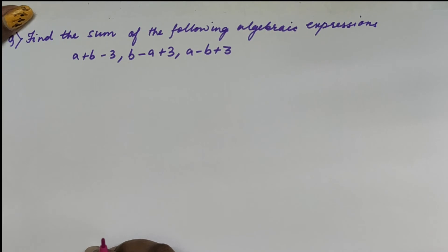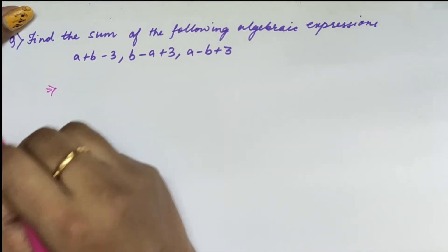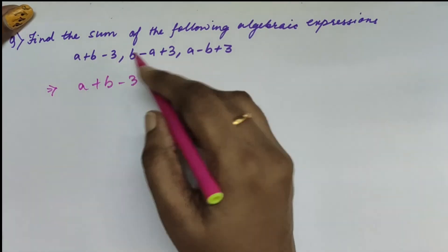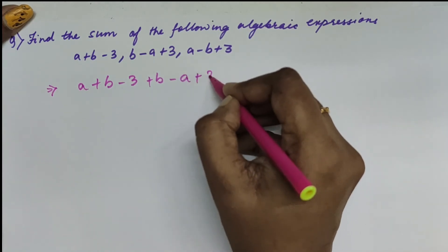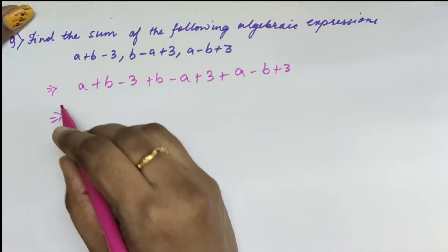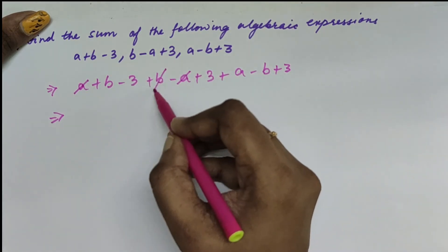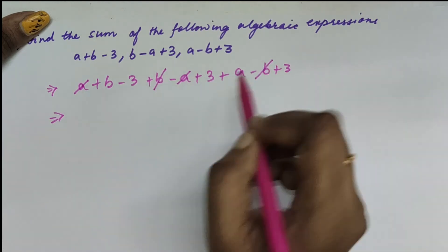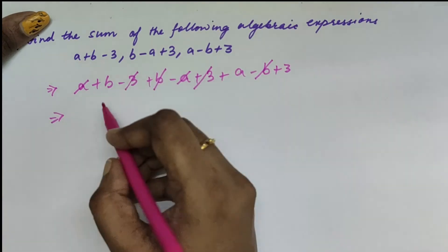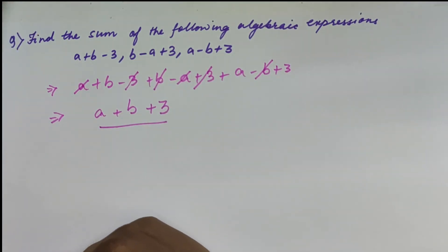The next question asks to find the sum of the following algebraic expressions — three expressions are given. Using the horizontal method: since it is a sum, we directly put a plus and write all terms. Grouping like terms: 1a and minus a cancel; positive b and negative b cancel; positive 3 and minus 3 cancel. So we are left with a plus b plus 3 as our final answer.